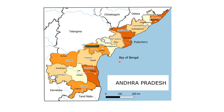Among the 13 districts of Andhra Pradesh, which district is a landlocked district? Please answer in the comment section. Andhra Pradesh also borders the Union Territory of Puducherry, because we have the Yanam enclave close to East Godavari district.